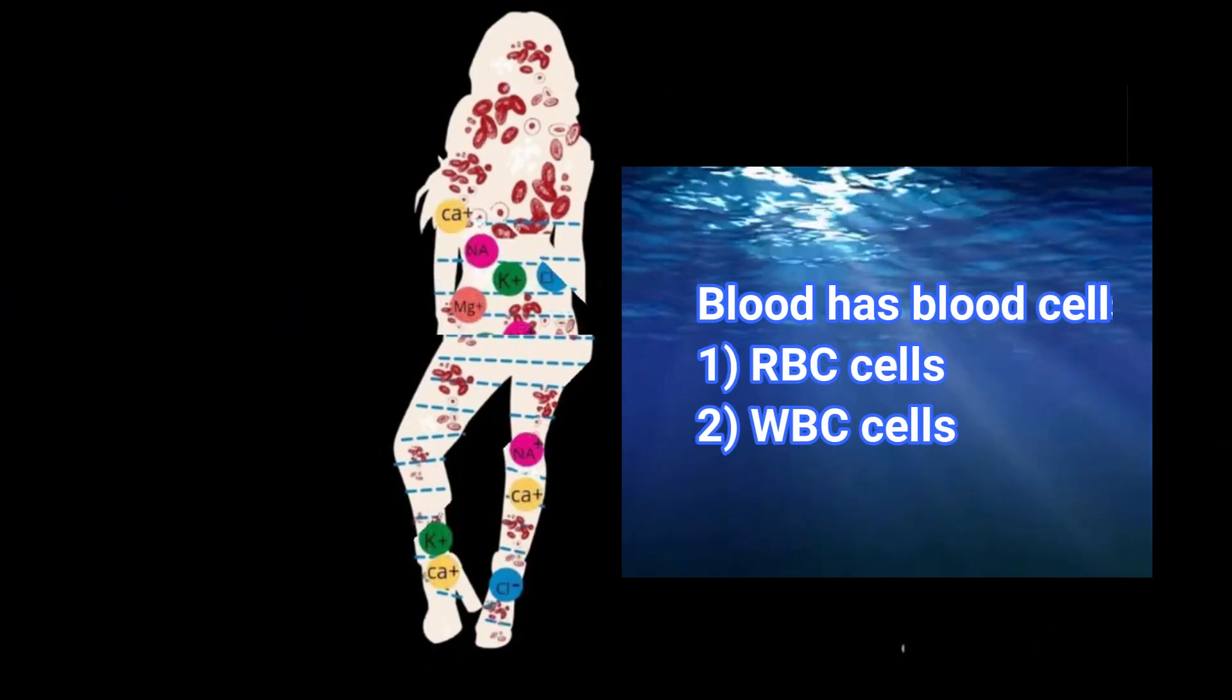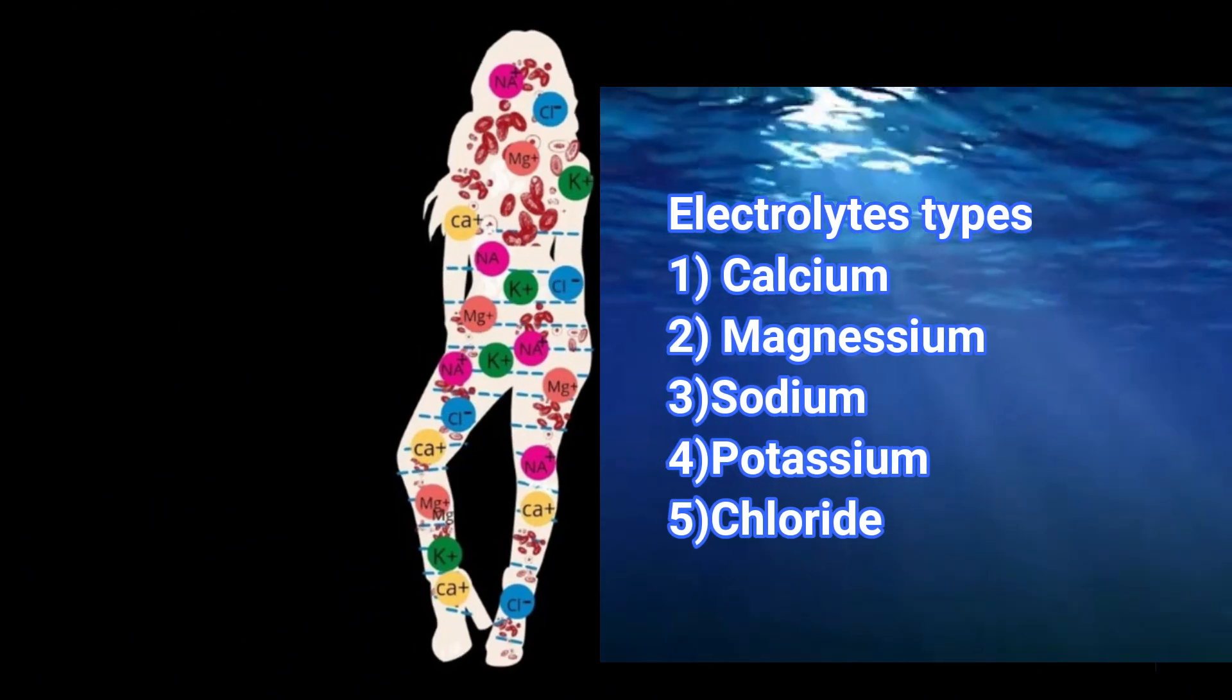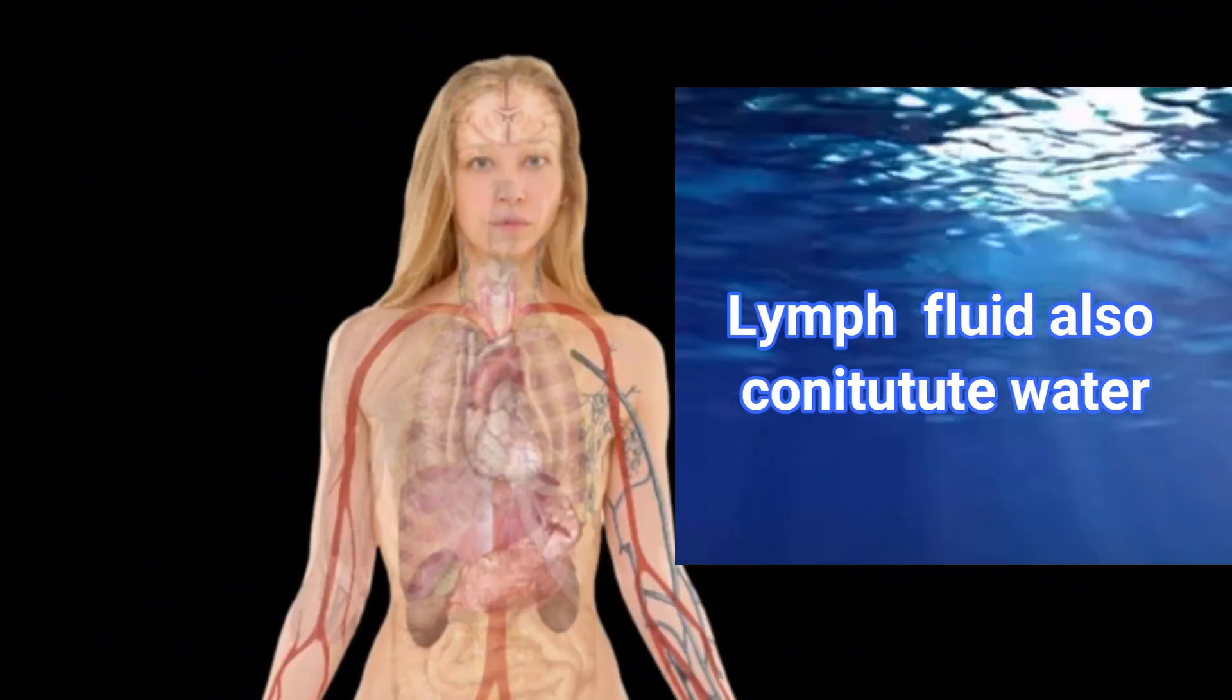Then more than water, our body has something called the electrolytes. We have calcium, we have magnesium, we have sodium in our body. So electrolytes constitute. Then we have lymph. Lymph fluid itself also constitutes as a part of the liquid of our body.